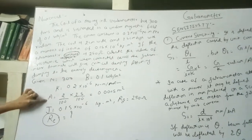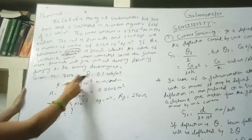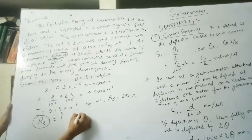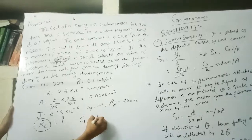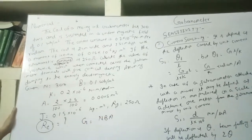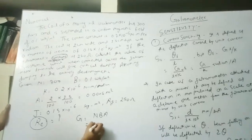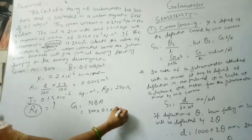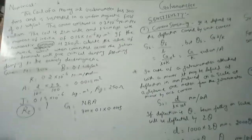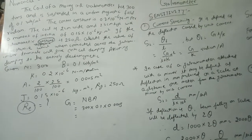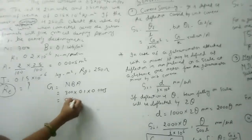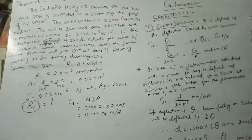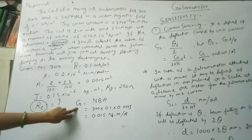A is given, B is given, and the controlling constant K and number of turns N are also given. So you can easily find G = NBA. Put in the values: 300 × 0.1 × 0.005. After calculation, G = 0.015 Newton meter per ampere.